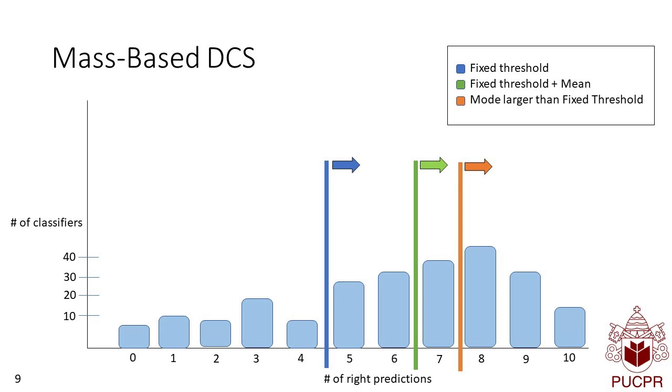And also we tested the mode larger than the fixed threshold. Then this means that the classifiers considered for vote are those with the number of right predictions that are higher than these approaches.